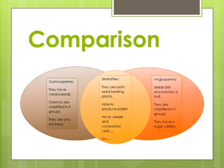Gymnosperms have naked seeds and are classified in four groups; they are only tall trees. Similarities between gymnosperms and angiosperms: they are both seed-bearing plants, able to produce pollen, and have vessels and companion cells. Angiosperms have seeds enclosed by a fruit and are classified in two groups, with a huge variety.